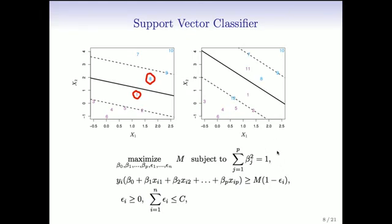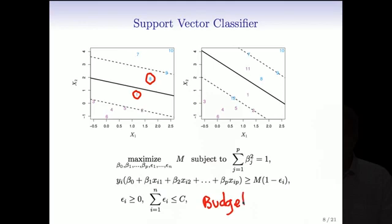We need to modify the formulation of the problem to accommodate this. Part of the problem is the same: we're going to maximize M subject to the betas summing in squares to 1, so that's a unit vector. Now we want the distance of all the points to be bigger than M, but discounted by a factor of 1 minus epsilon_i. So we allow some slack — some points needn't be exactly bigger than the margin. We give ourselves a budget C for the total amount of slack. The epsilons tell us how much each point is allowed to be on the wrong side of its margin, as a relative amount relative to the margin.